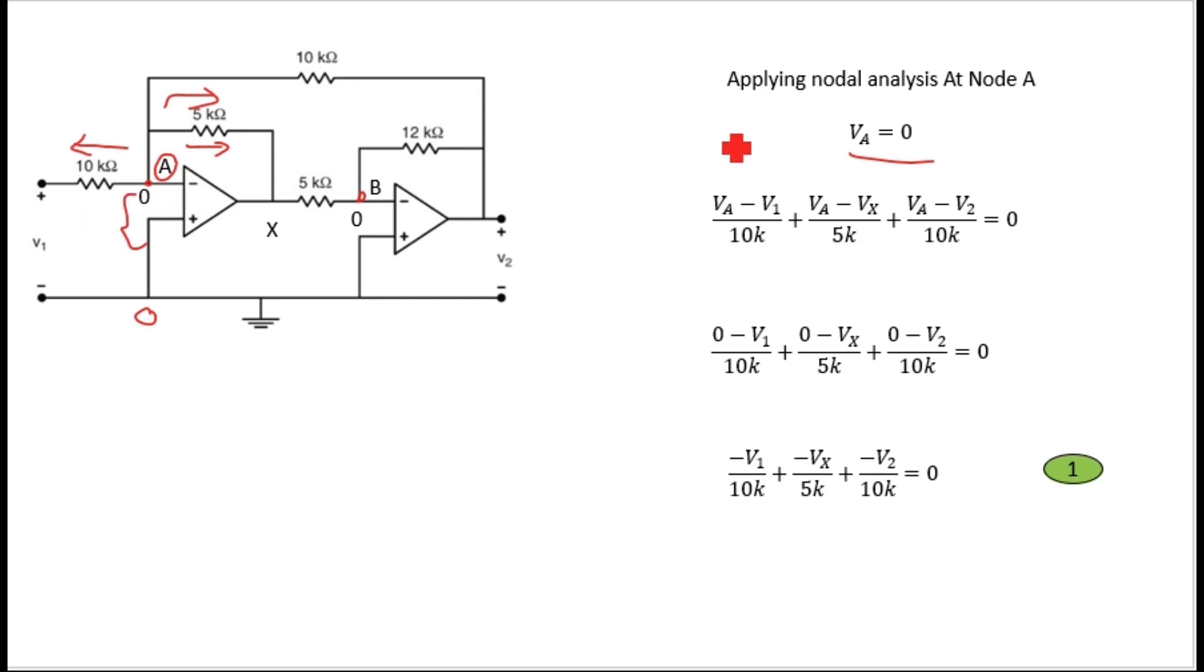So VA minus V1 divided by 10k first term, VA minus Vx divided by 5k second term, and VA minus V2 divided by 10k, that equals zero.